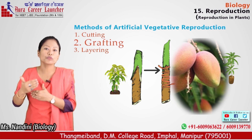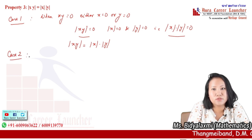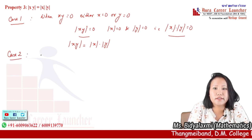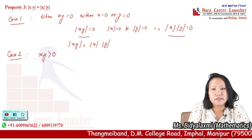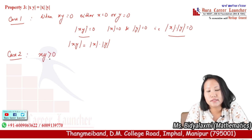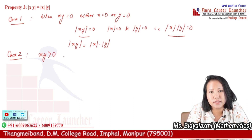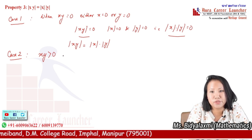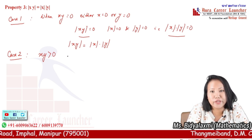Now let's move on to case number two. In case number two, we consider xy greater than zero, and the product of two numbers is positive.